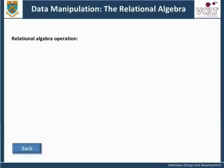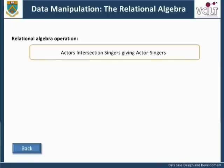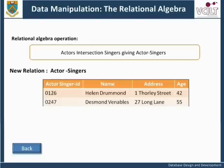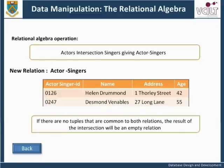The relational algebra operation: Actors intersection Singers giving actor-singers. The intersection of actors and singers produces a new relation containing only those tuples that occur in both of the original relations. If there are no tuples that are common to both relations, the result of the intersection will be an empty relation — there will be no tuples in the new relation. Note that an empty relation is not the same as an error; it simply means there are no tuples in the relation. An error would occur if the two relations were found not to be union compatible.